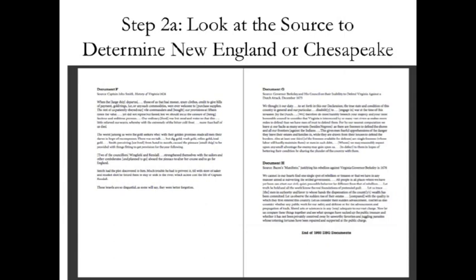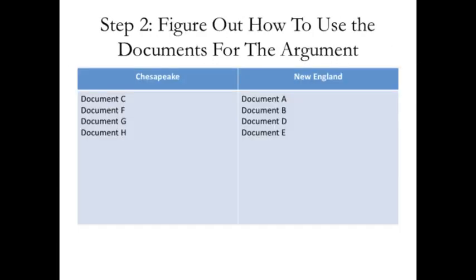Document F belongs to Captain John Smith — it's a history of Virginia. Virginia is in the Chesapeake, so that's a Chesapeake document. For the last two: document G is from William Berkeley about defending the Virginia colony against a Dutch attack. Since that mentions Virginia, it is a Chesapeake document. Then we have Bacon's Manifesto — there is only one guy in U.S. history with the last name Bacon, the same guy who led Bacon's Rebellion, which took place in Jamestown. So that is also a Chesapeake document. Documents C, F, G, and H are all Chesapeake; A, B, D, and E are all New England.